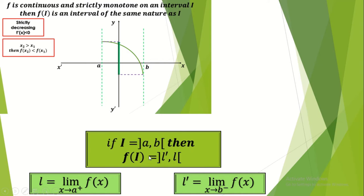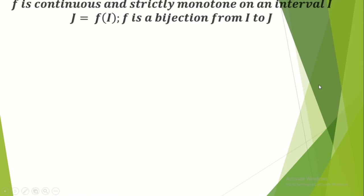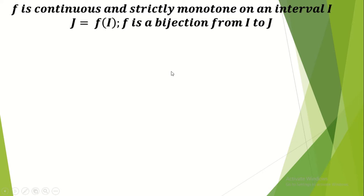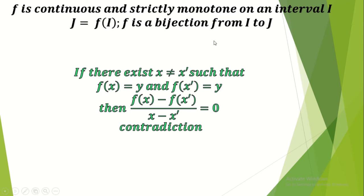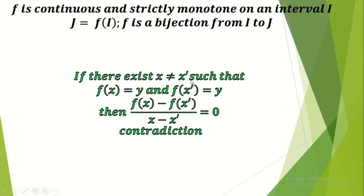If f is continuous and strictly monotone on an interval I and J = f(I), then f is a bijection from I to J. If there existed two distinct points x and x′ such that f(x) = f(x′) = y, then [f(x) − f(x′)]/(x − x′) = 0, which is a contradiction since f is strictly monotone. So one of the most important properties: when a function is continuous and strictly monotone, f is a bijection from I to f(I) = J.